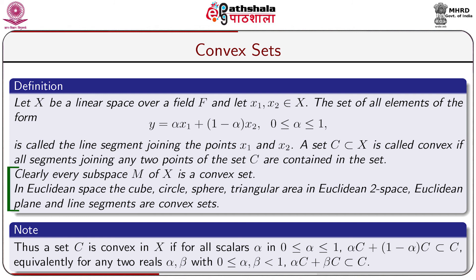Clearly, every subspace M of X is a convex set. In Euclidean space, the cube, circle, sphere, triangular area, in Euclidean two-space (the Euclidean plane), and line segments are all convex sets.